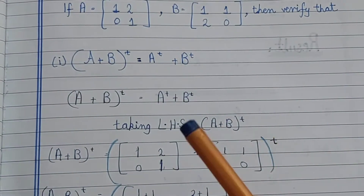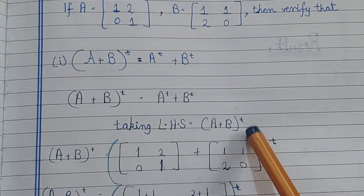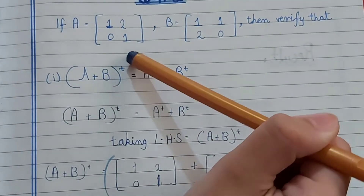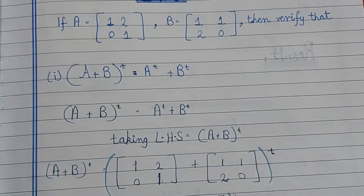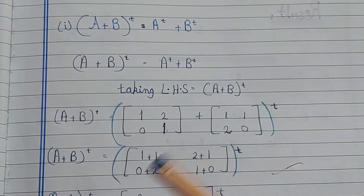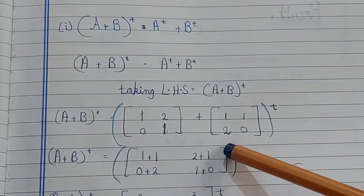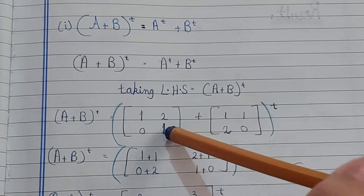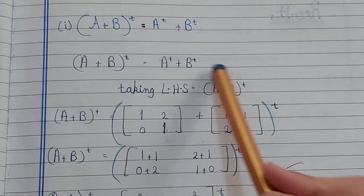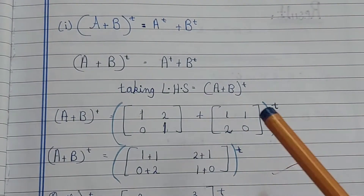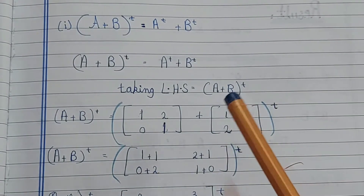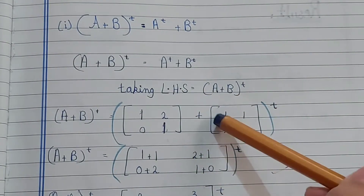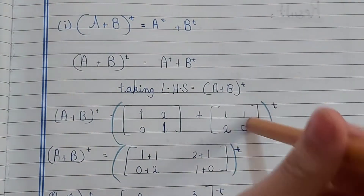On the left-hand side we have (A + B) transpose. The matrix A has values [1,2;0,1] and matrix B has values [1,1;2,0]. The circle bracket with the transpose sign means we first find the sum of A and B, and then take its transpose.